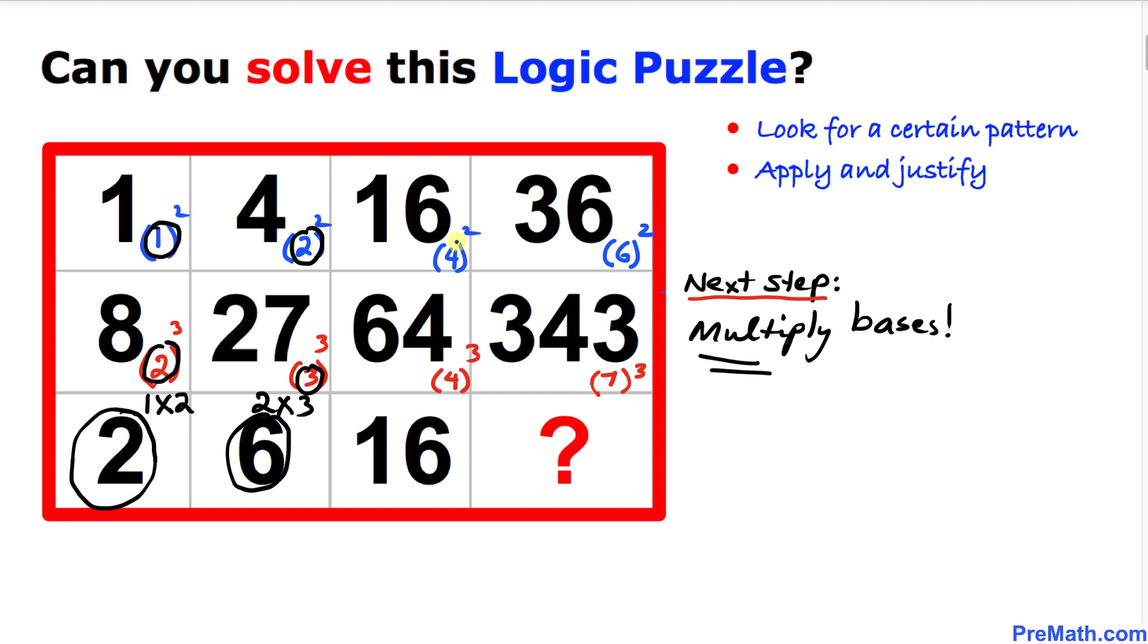Likewise in the next column our base is 4 and here's base 4 once again, so 4 times 4 is going to give us 16. And finally in this fourth column our base is 6 and the next base is 7, so 6 times 7 means this number is supposed to be 42.